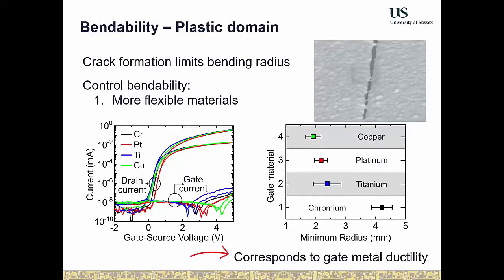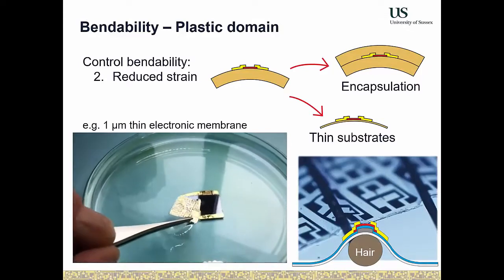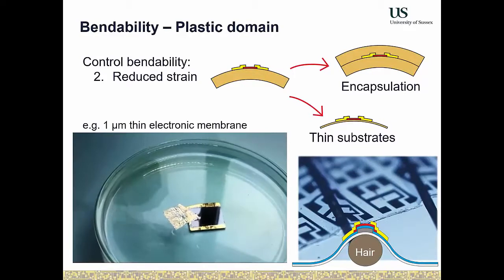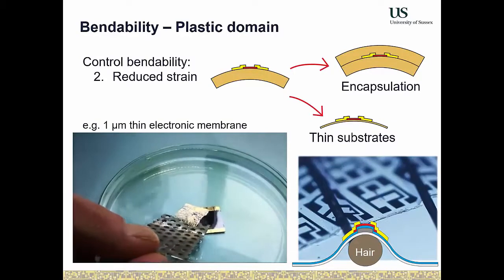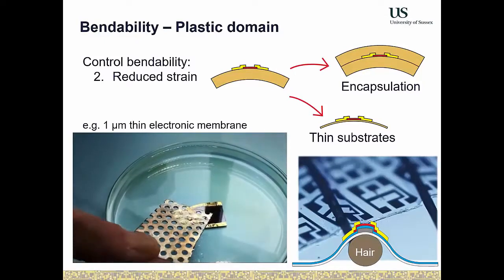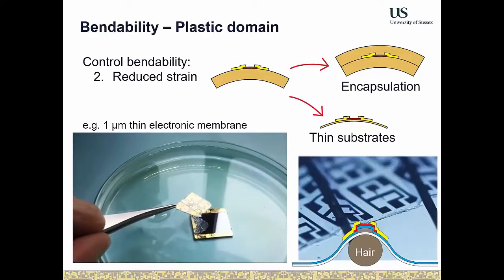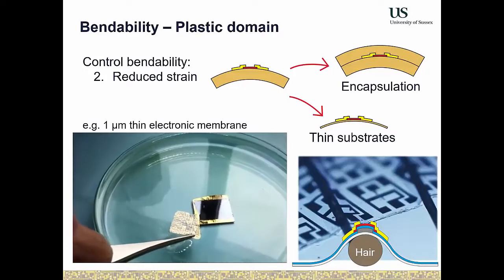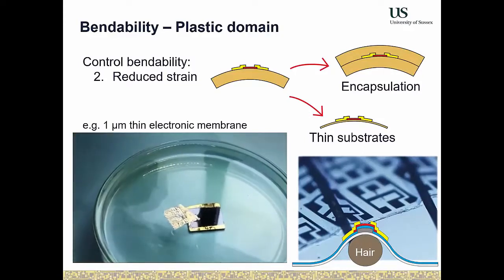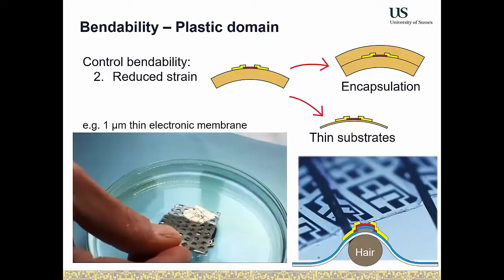The second option is to reduce the experienced strain. We can encapsulate transistors and move them to the neutral strain axis, achieving a few hundred micrometers bending radius, but this significantly increases system stiffness. Instead, we went to super-thin 1 µm polyamide substrates — reducing substrate thickness by a factor of 50, which reduces bending strain by a factor of 50. This means we can essentially do whatever we want with these transistors without destroying them.